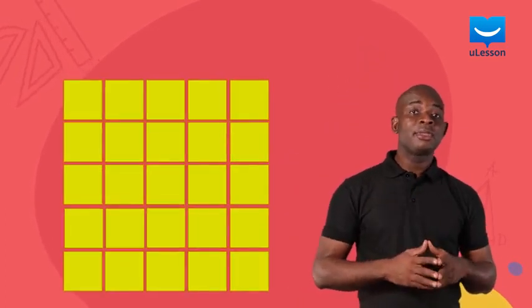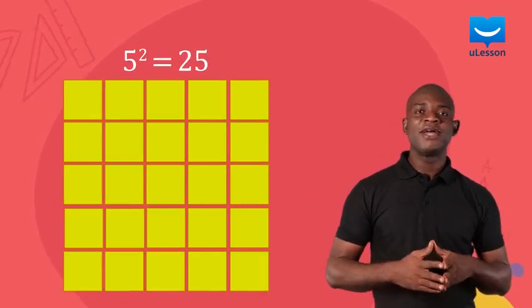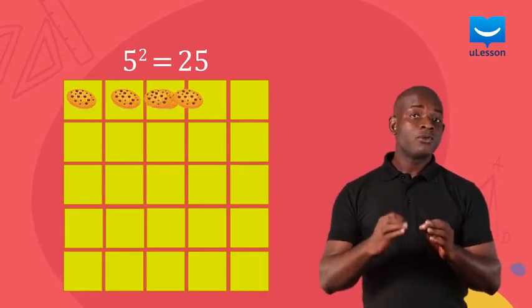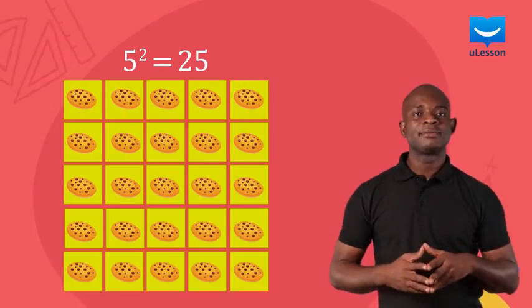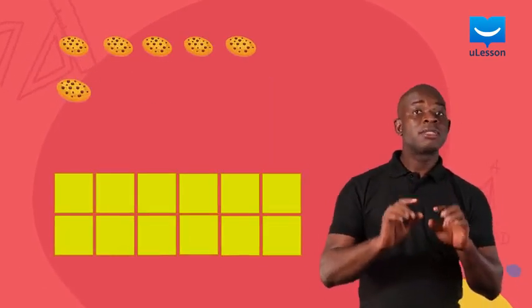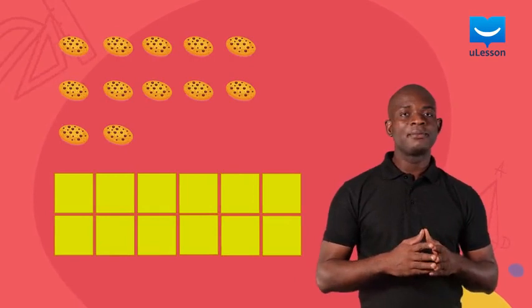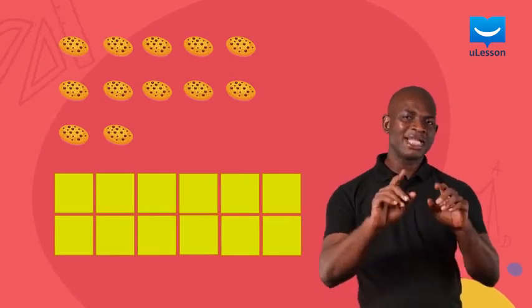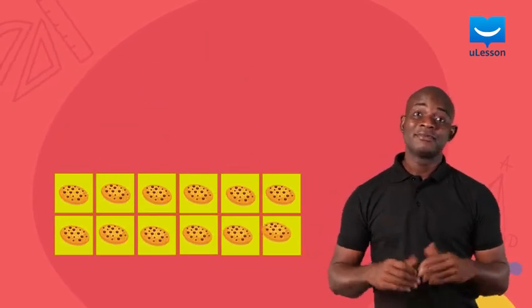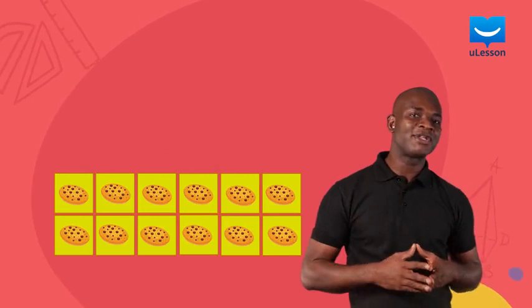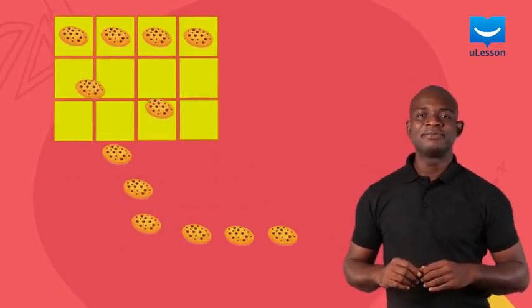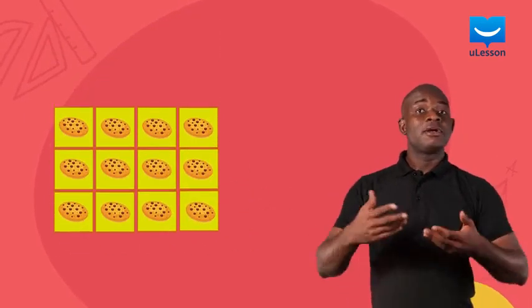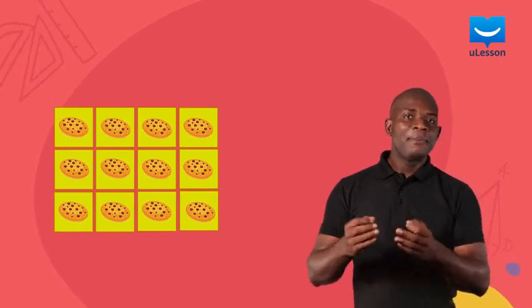Let's try 5 squared. 5 squared is 25. 25 cookies can be arranged to fill up a square. Can 12 cookies be arranged to fill up a square? Let's try arranging it. No, it will not form a perfect square. Let's try another way. It still does not form a perfect square.